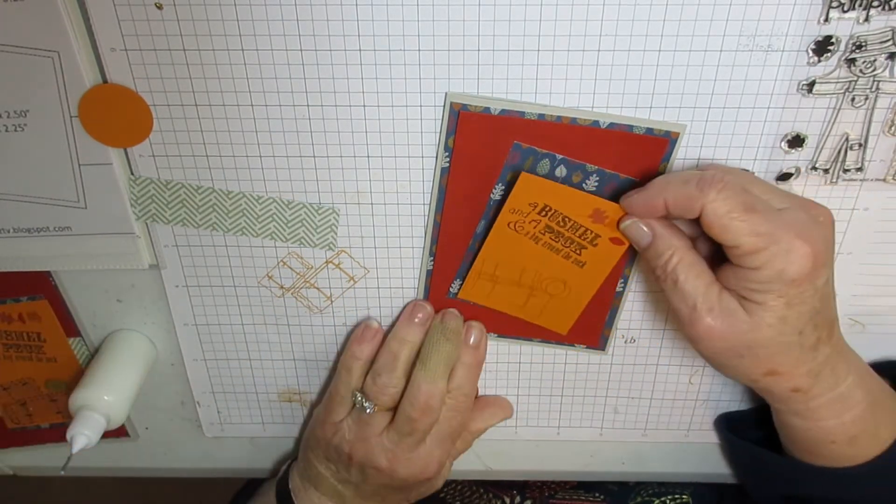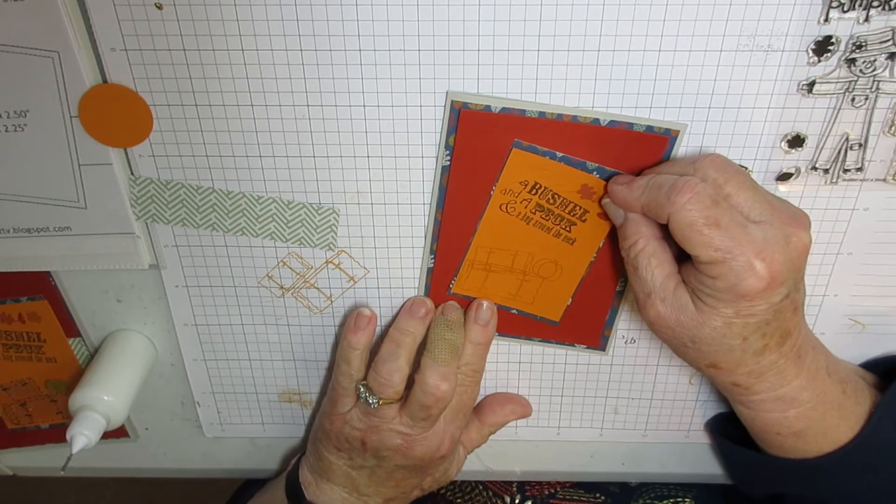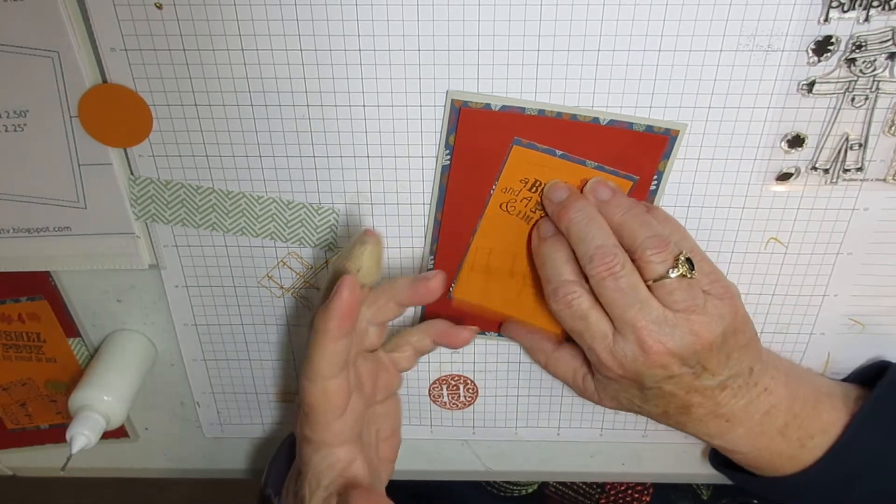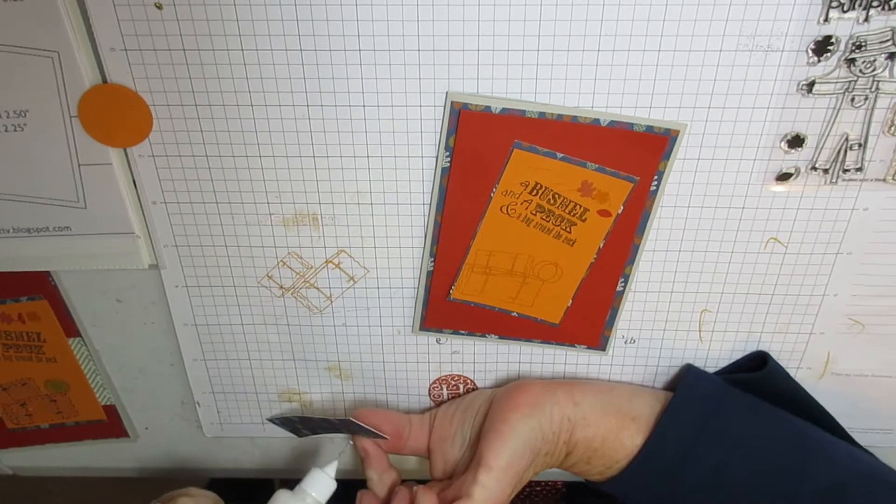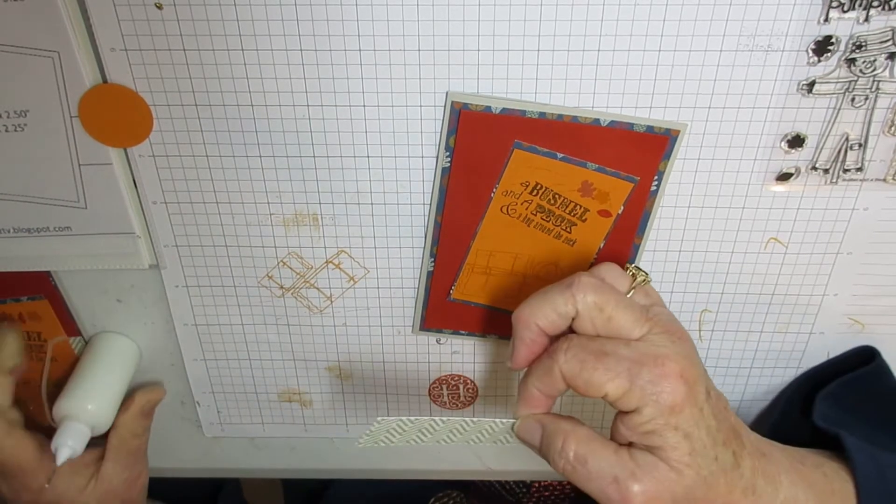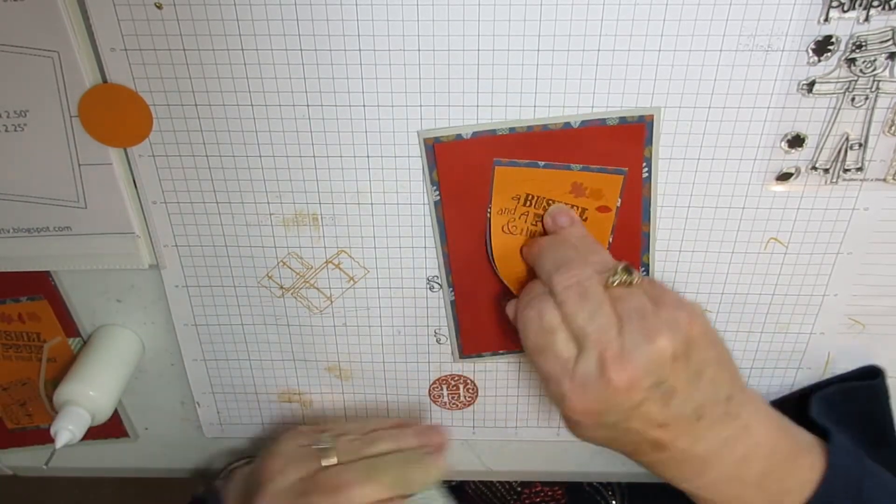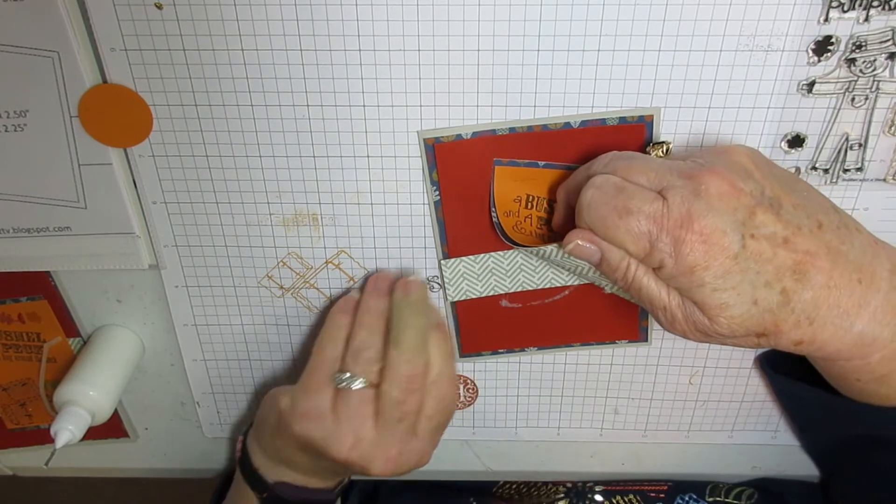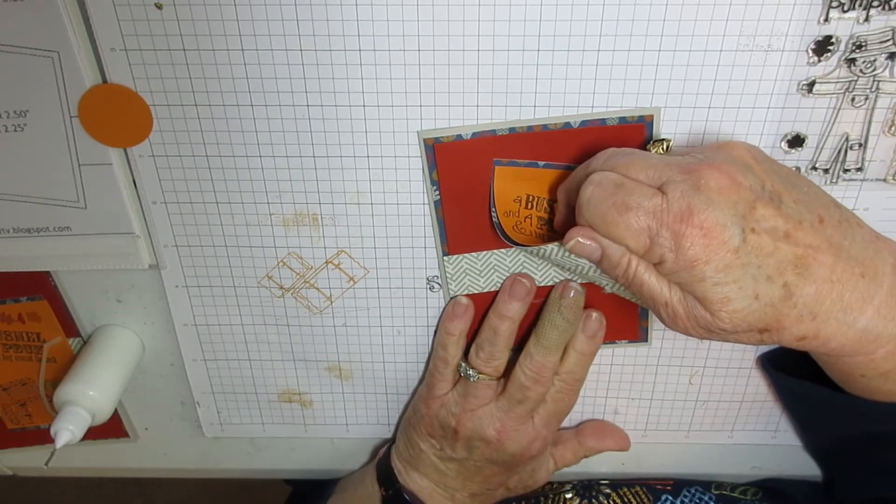Uh-oh, this is the next layer and I see what I've done. I got going too fast. This border, one by four, is supposed to go on underneath here, so we'll just open that up and put it down.